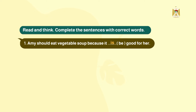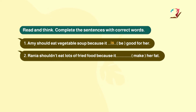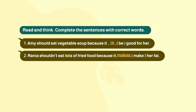Number two: Rania shouldn't eat lots of fried food because it ___ hair fat. The subject before the verb 'make' is 'it' — singular — so we add 's'. The answer is 'makes': because it makes hair fat.